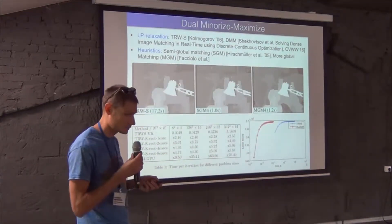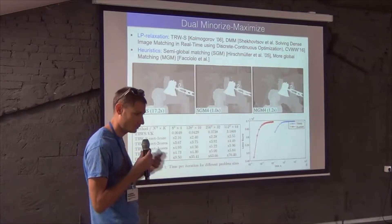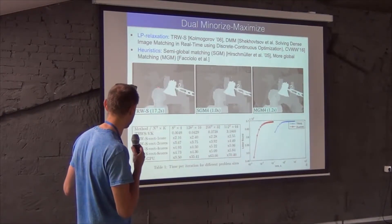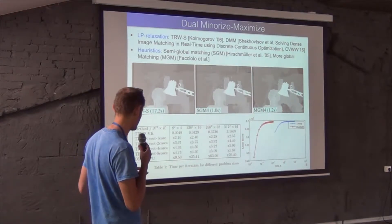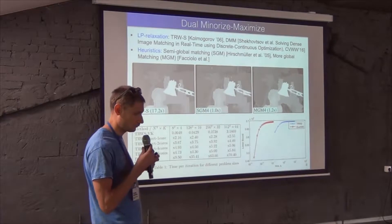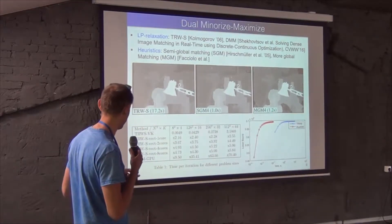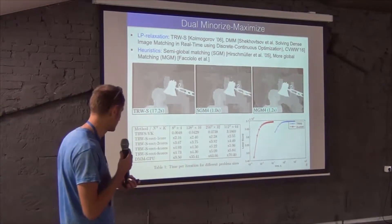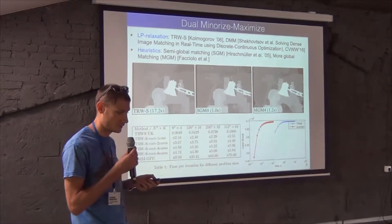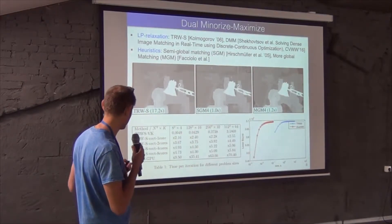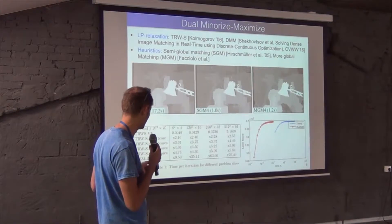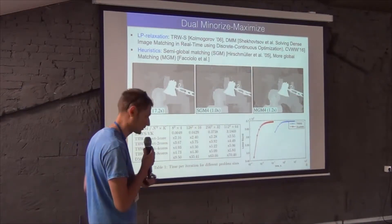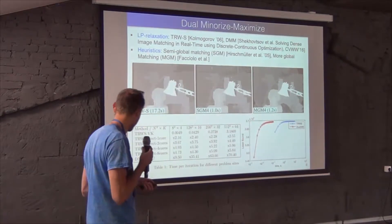And one of the things that I contributed to this development is a fast method to do something like that. There is a state of the art method for finding such optimal dual solution, and it is a sequential algorithm that can be parallelized to some extent. So people did that, implemented that in FPGA and so on. But they say that it is not fast enough. So there are very popular heuristics that are semi-global matching or more global matching. But you see, they still have a lot of errors, at least in this example.